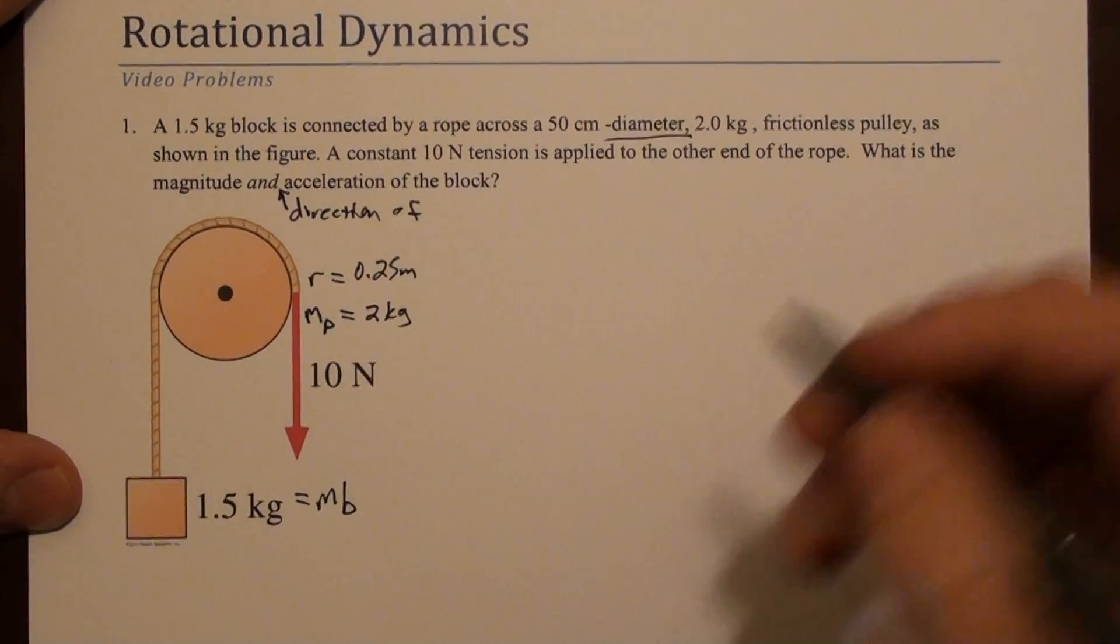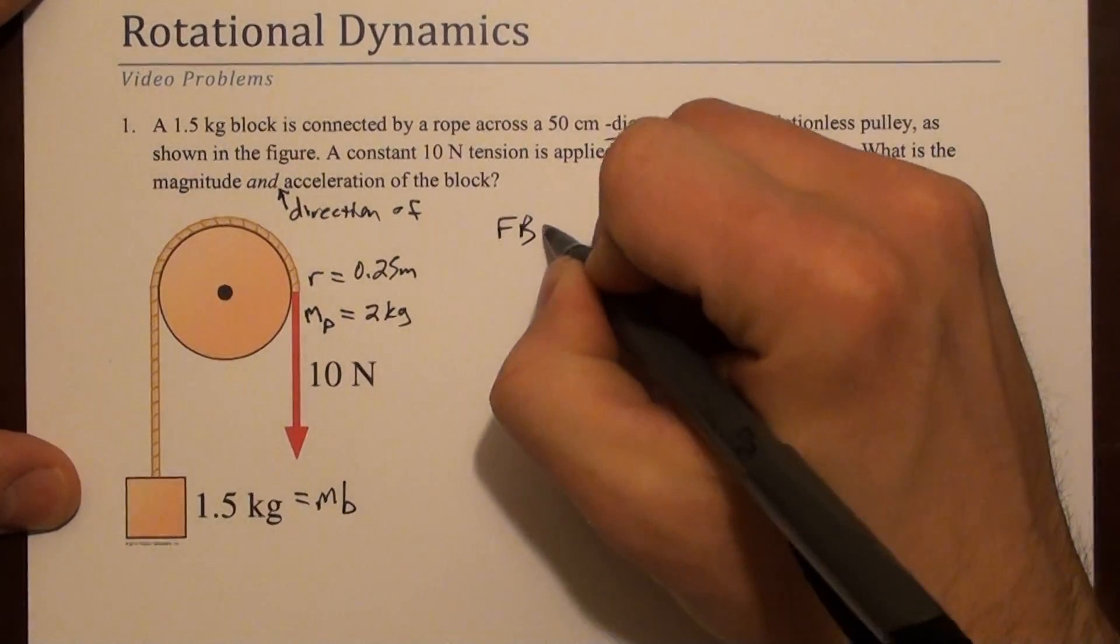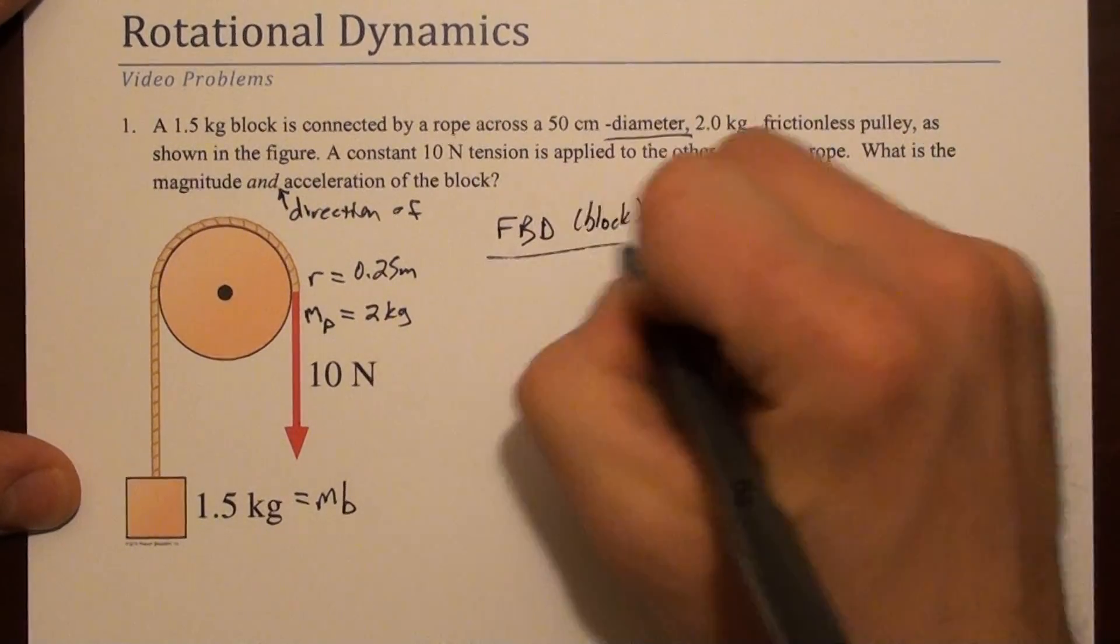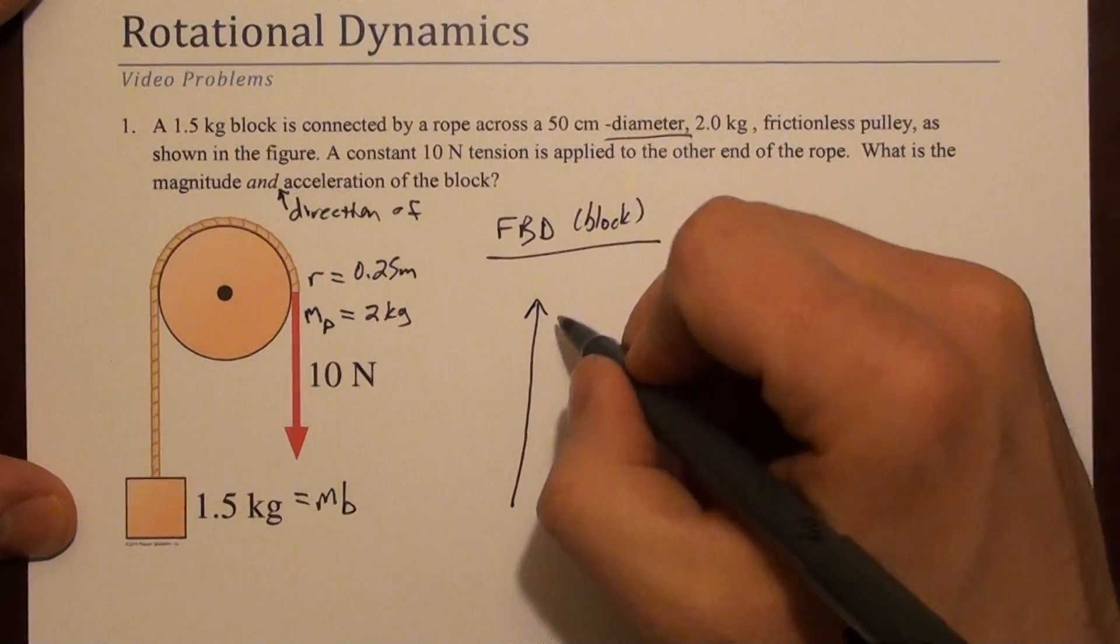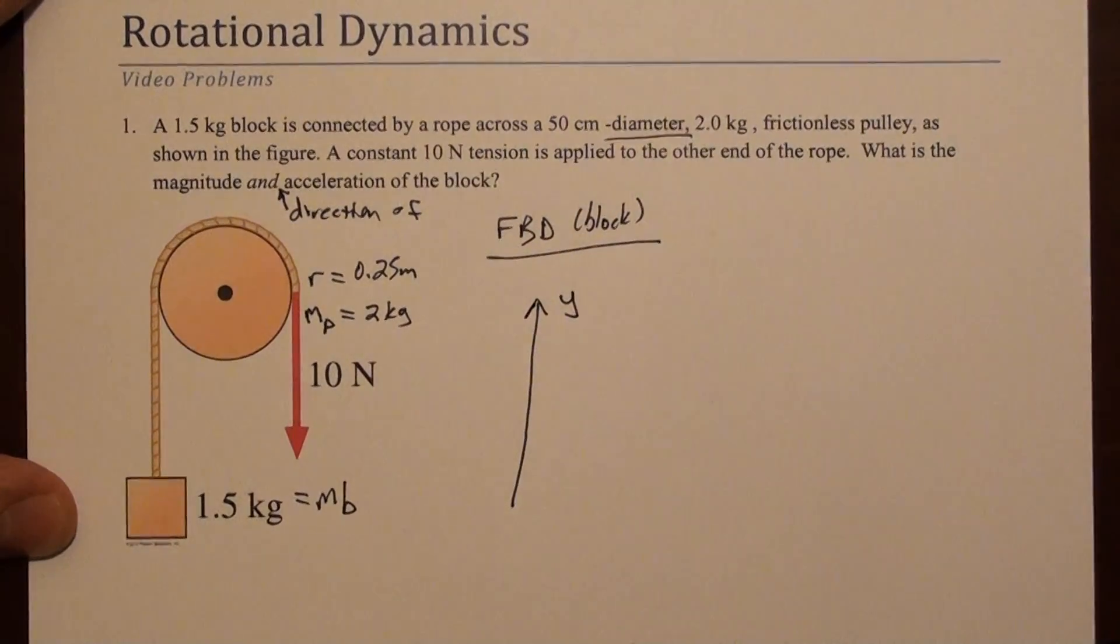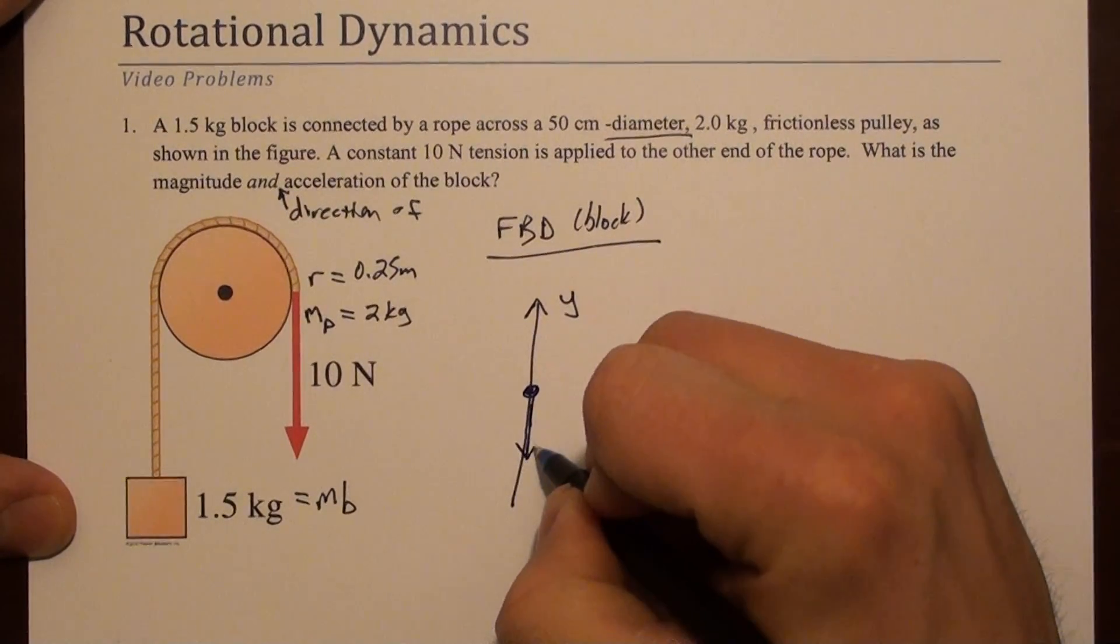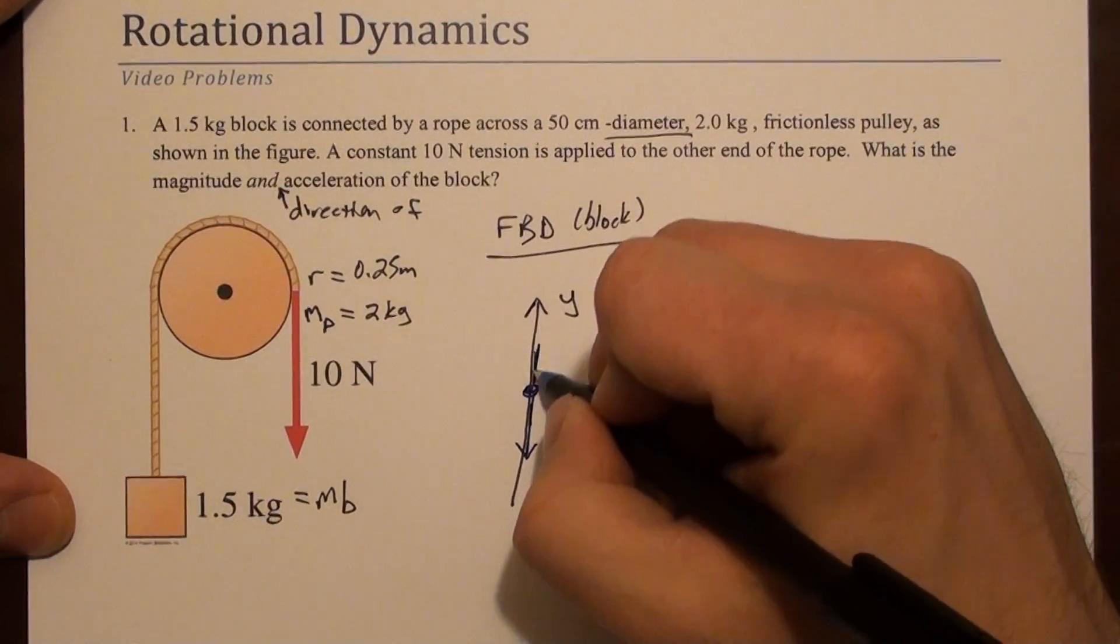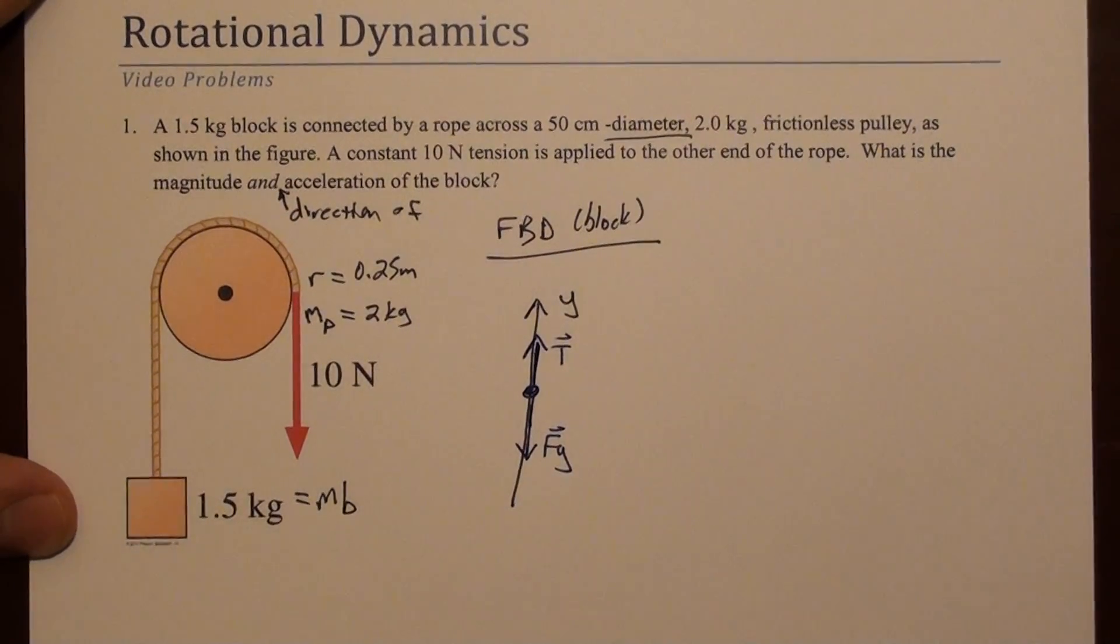So let's draw a free body diagram of each of these objects separately. So we'll do a free body diagram of the block first. We'll draw our axis. We'll choose up to be positive. And the two forces acting here are weight, so f sub g, and a tension, t, acting straight up. And that's it.